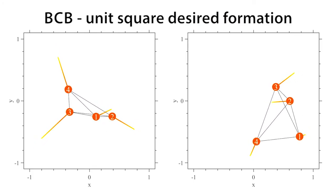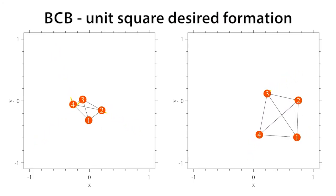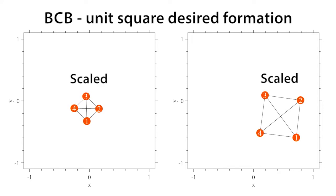In the BCB approach, the almost global convergence of the agents to the desired formation shape is guaranteed. However, the formation scale cannot be controlled.